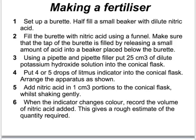The indicator gives just two colours. Once litmus is added to the conical flask with the potassium hydroxide, it turns blue, showing it's an alkali. We then add the nitric acid in small portions while shaking gently, watching for a colour change. When the indicator just changes to red, we stop adding acid from the burette and record the volume added as accurately as possible.